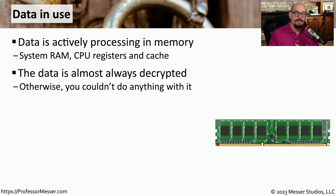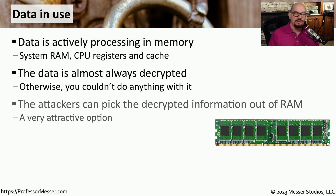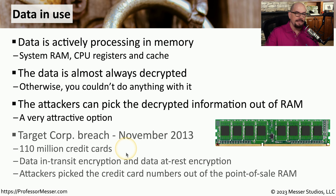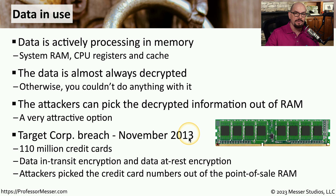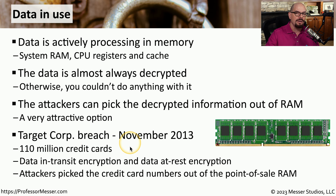That's because we need to be able to see the data to perform operations on it. That's why attackers like to target data in use — they know if it's in RAM, it's probably in an easily readable format. An example of an attack against data in use occurred in November 2013 with the Target Corporation. The attackers put code on every point-of-sale terminal in the Target network and were able to retrieve 110 million credit cards from the memory of those terminals.